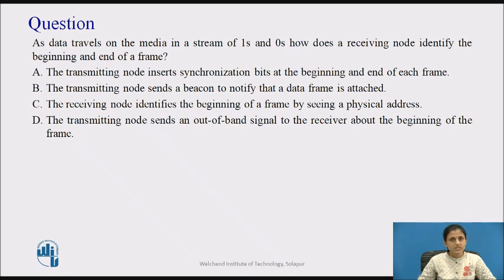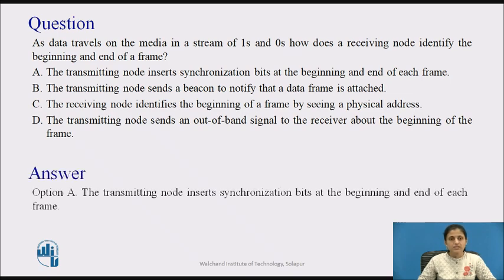As data travels on the media in a stream of 1s and 0s, how does a receiving node identify the beginning and end of a frame? Option A: the transmitting node inserts synchronization bits at the beginning and end of each frame. Option B: the transmitting node sends a beacon to notify that a data frame is attached. Option C: the receiving node identifies the beginning of a frame by seeing a physical address. Option D: the transmitting node sends an out-of-band signal to the receiver about the beginning of the frame. The answer is Option A — for synchronization between sender and receiver, one or more synchronization bits are added at the beginning and end of each frame.